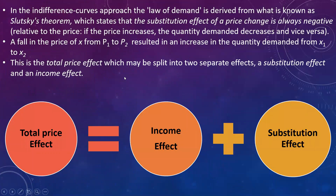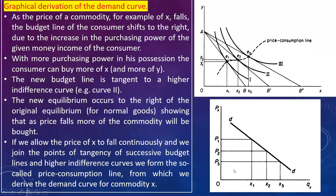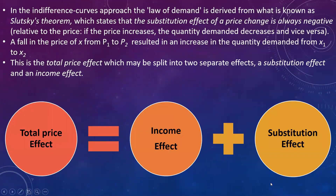In the indifference curve approach, the law of demand is derived from Slutsky's theorem, which states that the substitution effect of a price change is always negative — that is, if price increases, quantity demanded decreases and vice versa. This is Slutsky's theorem which forms the basis for the law of demand. A fall in price of X from P1 to P2 results in increasing the quantity demanded from X1 to X2, as you can see in the graph.